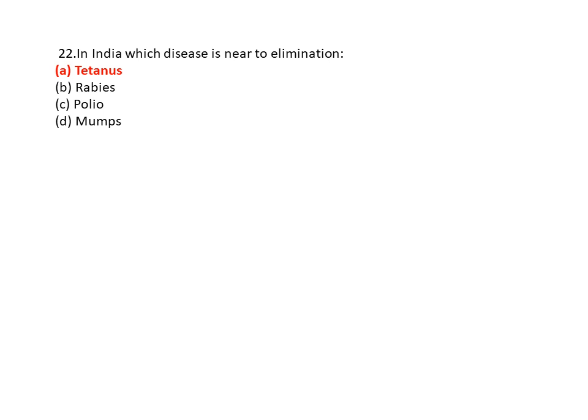Question 22: In India, which disease is near to elimination? Option A is tetanus, option B is rabies, option C is polio, and option D is mumps. So option A is the correct answer — tetanus.